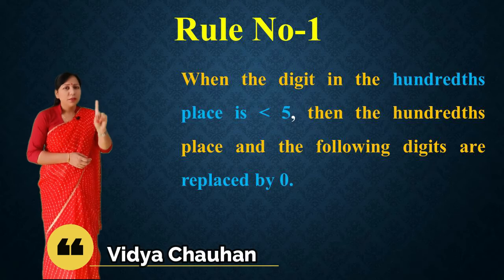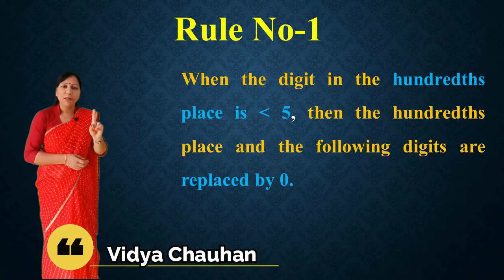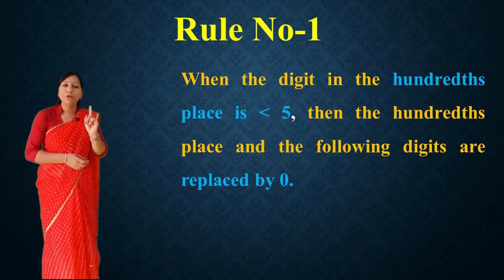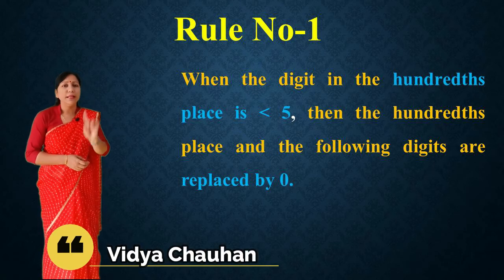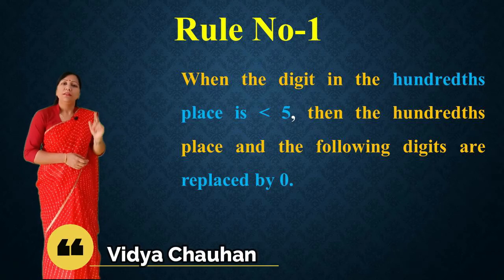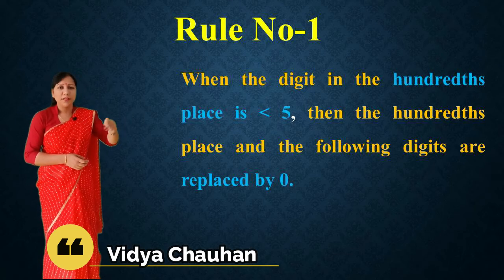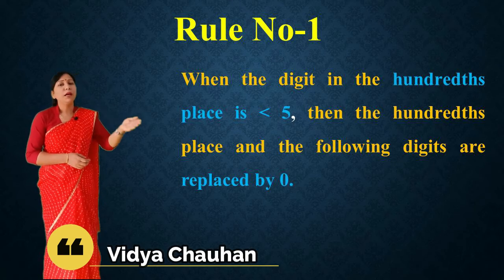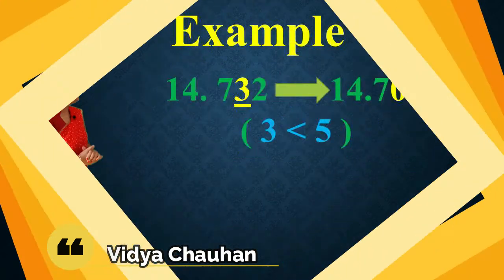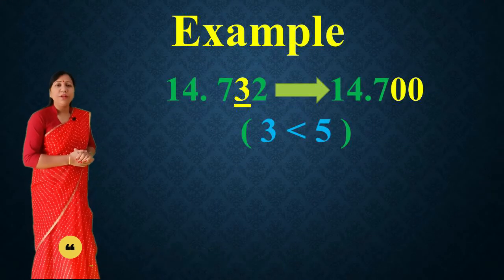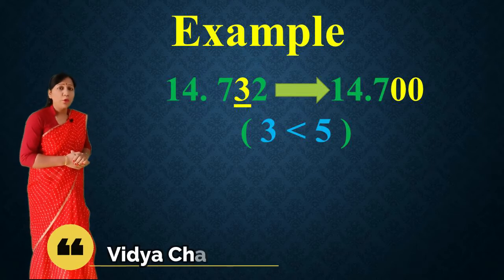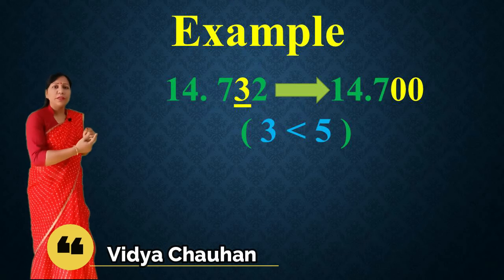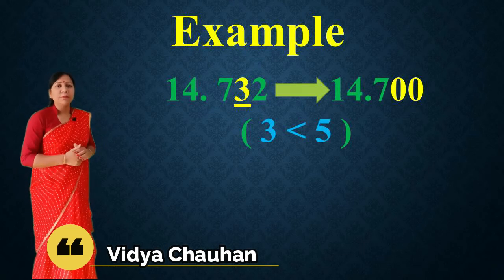So if you have to round off a decimal number to one decimal place, you check the hundredths place digit. If the hundredths digit is less than five, the hundredths place and the digits after it will become zero. For example, the number 14.732 — you have to round off to one decimal place.